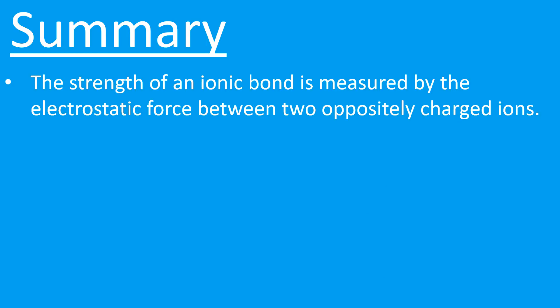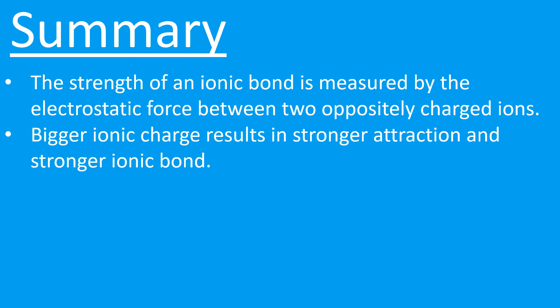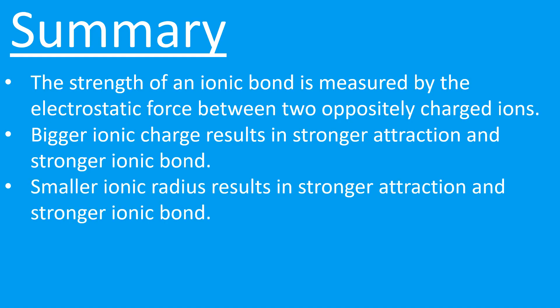In summary: the strength of the ionic bond is measured by the electrostatic force of attraction between two oppositely charged ions. The bigger the ionic charge, the stronger the attraction and the stronger the bond — a 2+ is more attractive than a 1+, and a 2− forms stronger ionic bonds than a 1−. Finally, the smaller the radius, the stronger the attraction and the stronger the ionic bond, because a smaller radius means greater charge density and stronger attraction to oppositely charged ions.